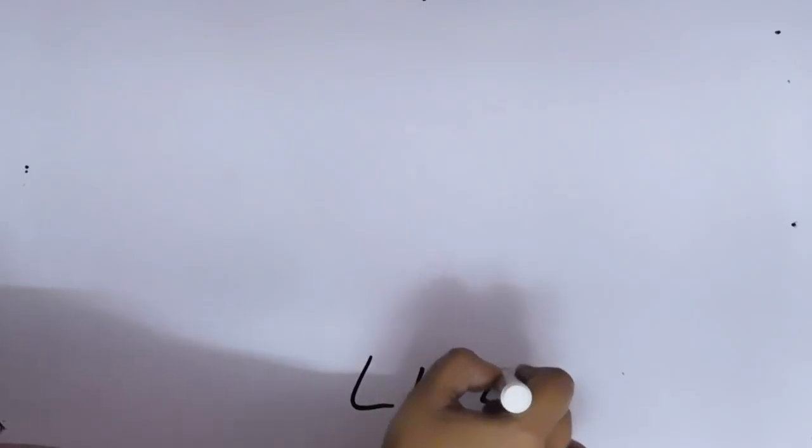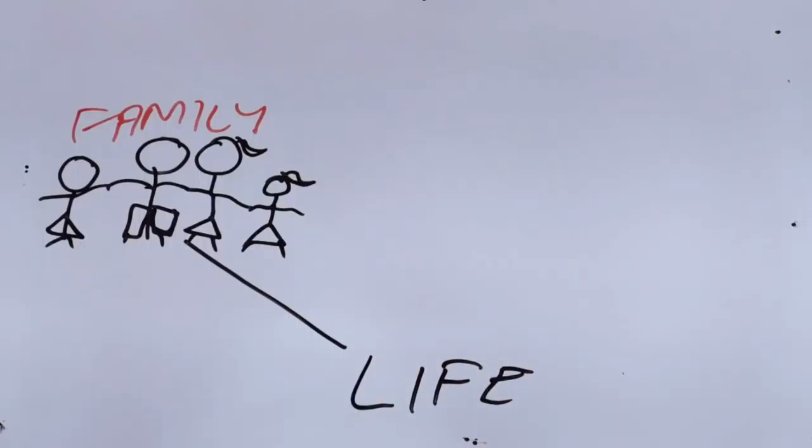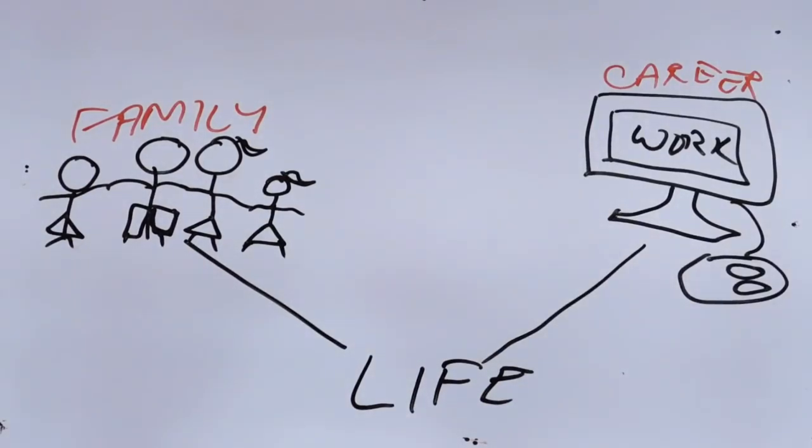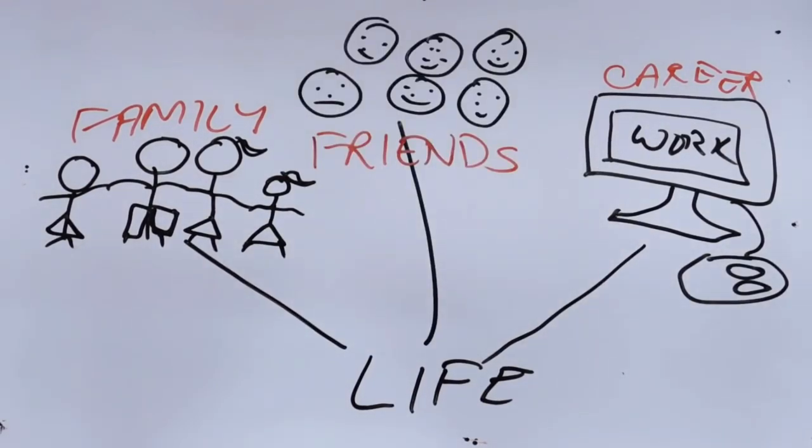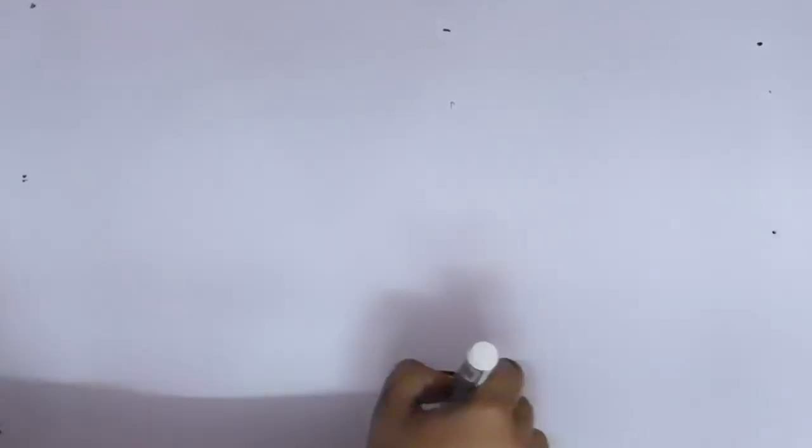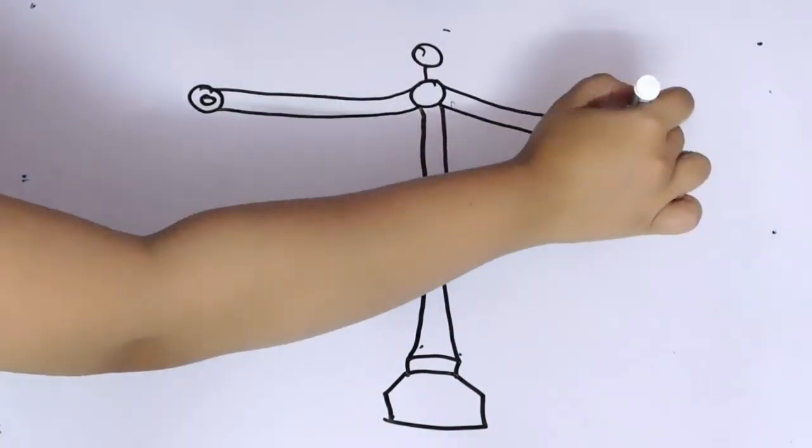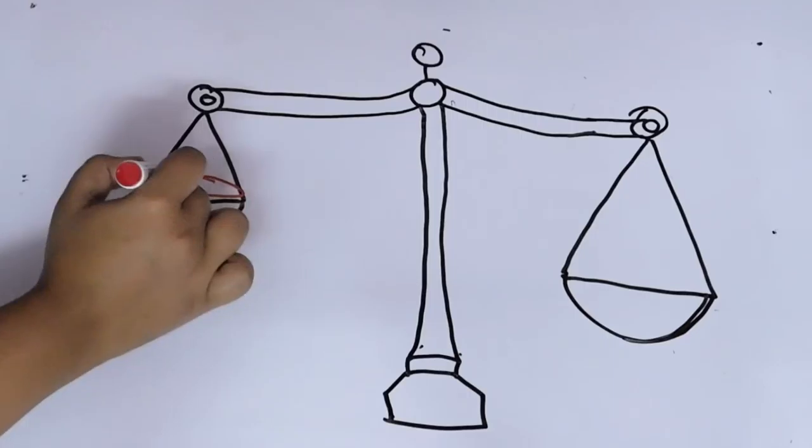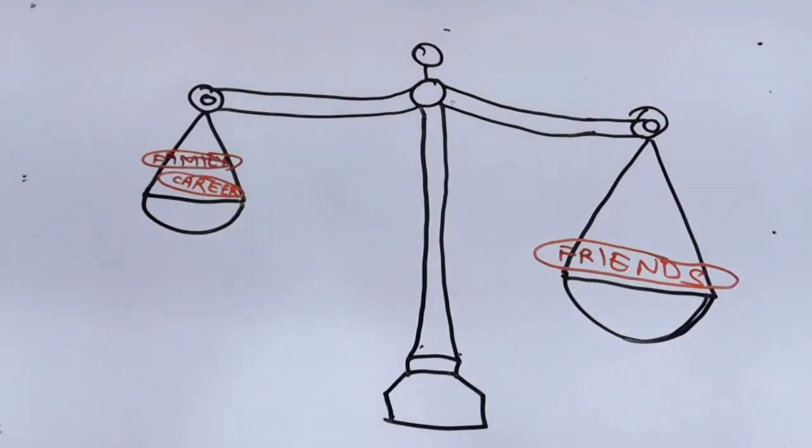Like everyone else, my life was encircled by these three parts: my family that includes my parents and elder sister, my job and career, and my group of friends. Out of these three parts, I gave a lot of importance to my friends, many times even more than my family and career.